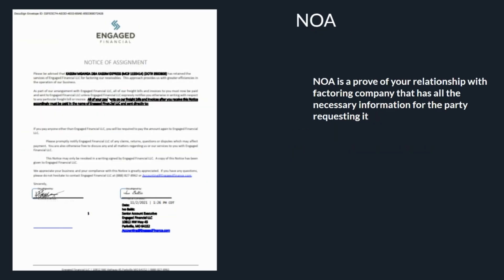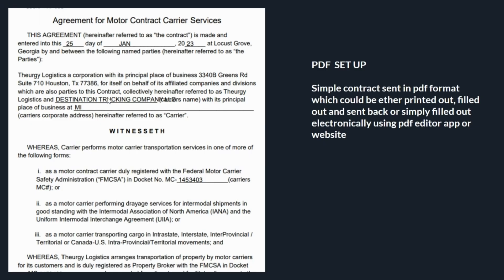When filling out this agreement, you refer to the information from the carrier packet. As you can see in this case, the carrier name, carrier MC — and if we go below, they're going to request you to place information about the company like address, EIN number, and so on. There might be other things they request, like the quantity of trucks the company has, but that's something I'll help you with when you fill out the agreement for the first time.